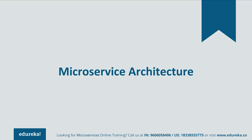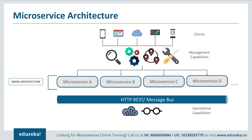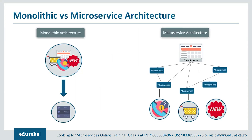Let's look at the different components of microservices architecture. The architecture starts with different clients from different devices trying to perform different management capabilities such as build, search, and notification. Each functionality is segregated into separate microservices handling their own data — for example, microservice A handles search, microservice B handles build, microservice C handles notification. All individual microservices have their own load balancing and execution environments. They communicate within themselves through REST or message bus to perform operational capabilities such as automation and monitoring. Client requests are passed to the internal architecture through an API gateway.